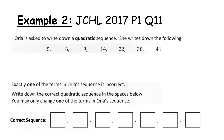Example 2: Orla is asked to write down a quadratic sequence and she writes down the following. Exactly one of the terms in Orla's sequence is incorrect. Write down the correct quadratic sequence in the space below — you may only change one of the terms in her sequence.